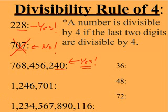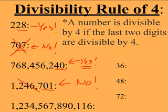The next one, 1,246,701. Just looking at the last two digits, we just get a 1. 4 does not go into 1. So I'd say no, this entire number is not divisible by 4.